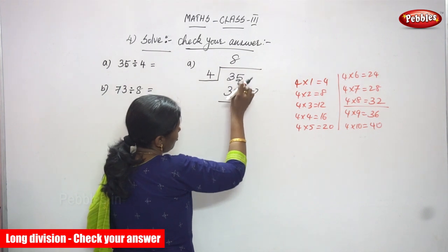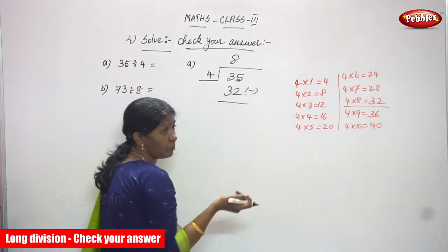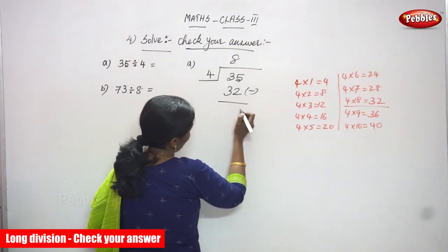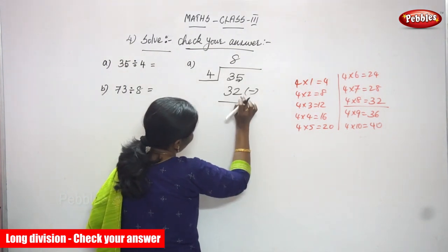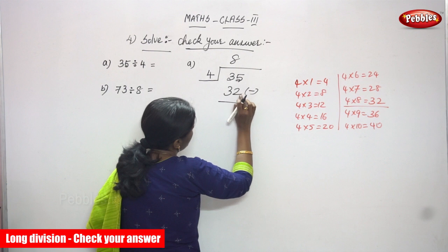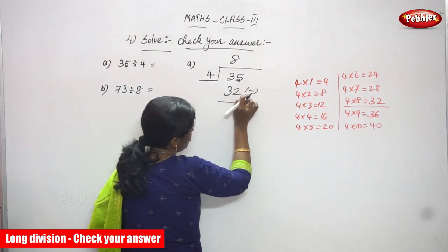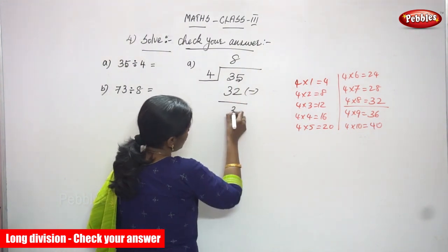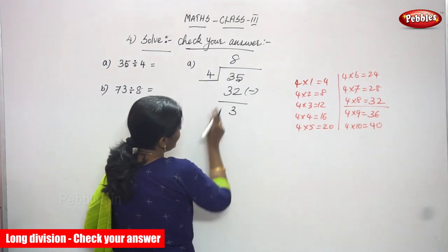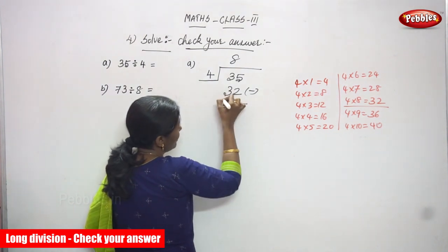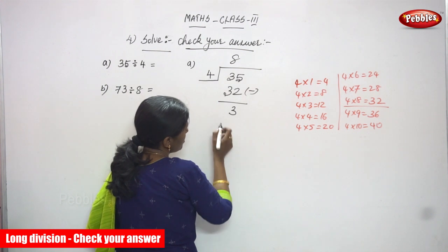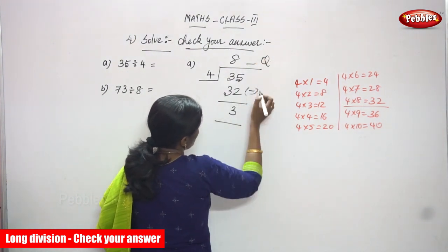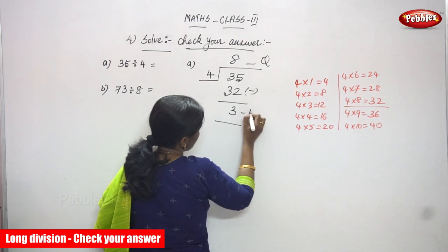Start with the ones. 5 minus 2 — do the backward counting: 3, 4, 5 — so the answer is 3. And 3 minus 3 is 0, so no need to write it. So the quotient is 8 and this is the remainder.